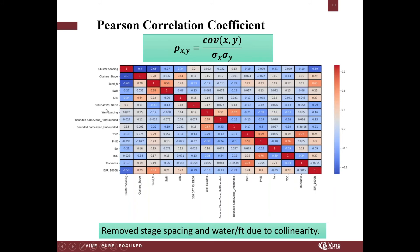For collinearity removal, this heatmap shows the relationship between all parameters — cluster spacing, stage spacing, and so on. We use it to find features with high Pearson correlation coefficient, defined as the covariance of X and Y divided by the standard deviation of X times the standard deviation of Y. In this case, we removed stage spacing because it was heavily collinear with cluster spacing, and we removed water per foot because it was heavily collinear with sand per foot. This is generated with one line of code using the Seaborn library: SNS.heatmap.